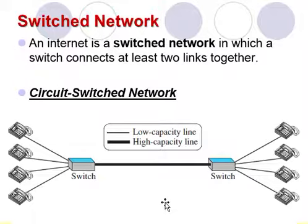In another case, only one telephone set on one side is connected to a telephone set on the other side, so only one fourth of the capacity of the thick line is used. This means that the circuit switch network is efficient only when working at full capacity. Most of the time it is inefficient because it is working at partial capacity.